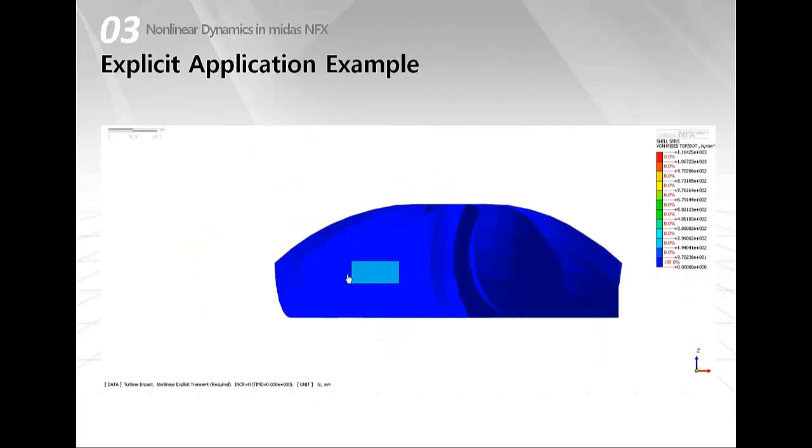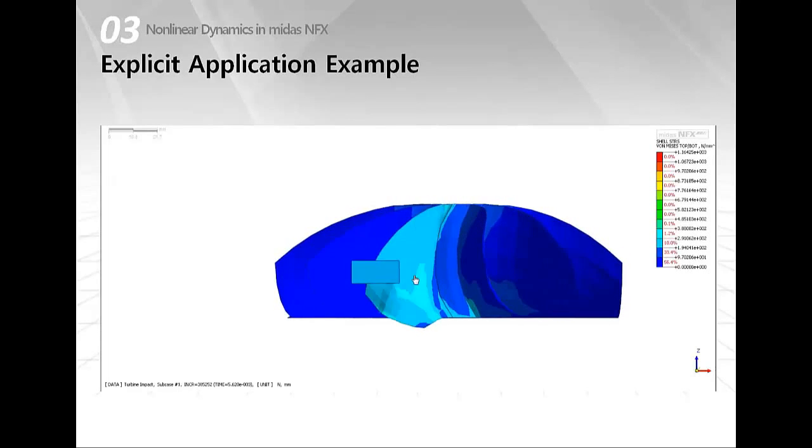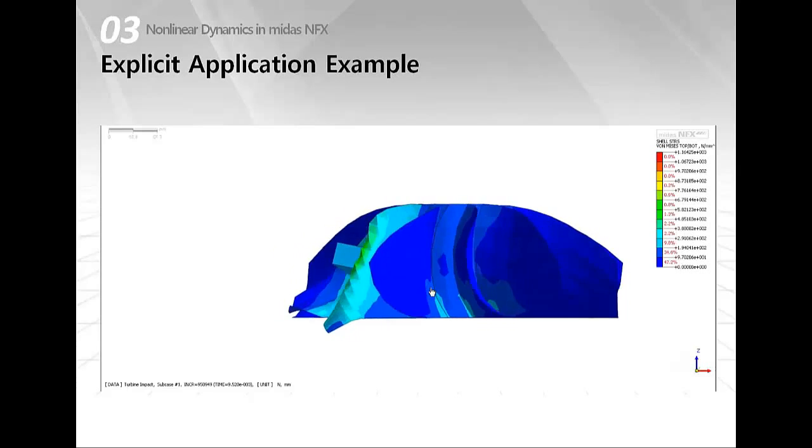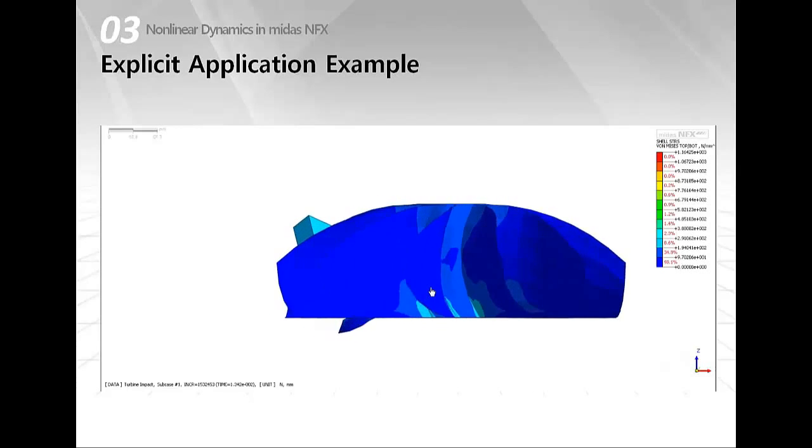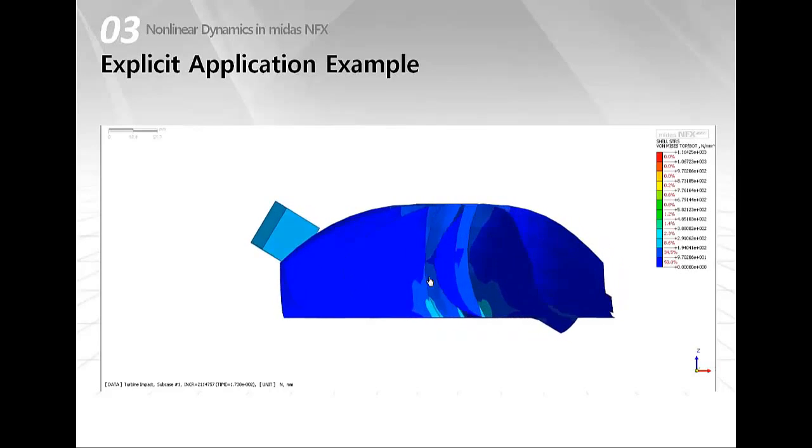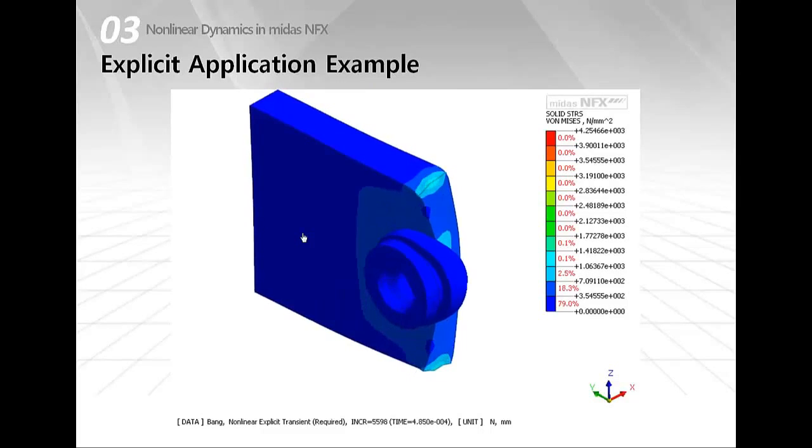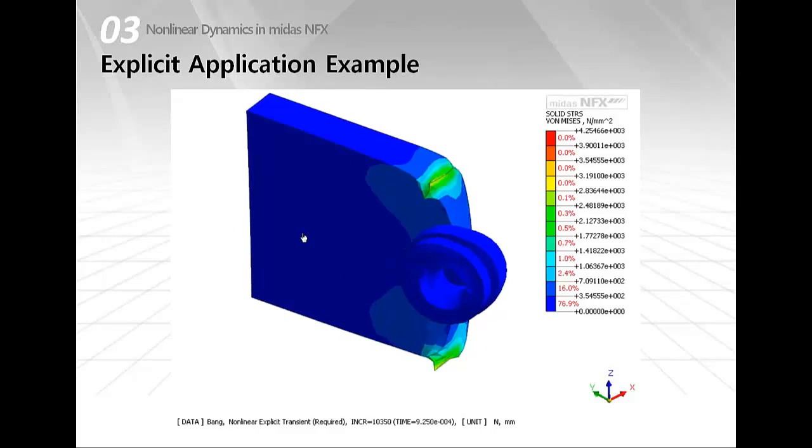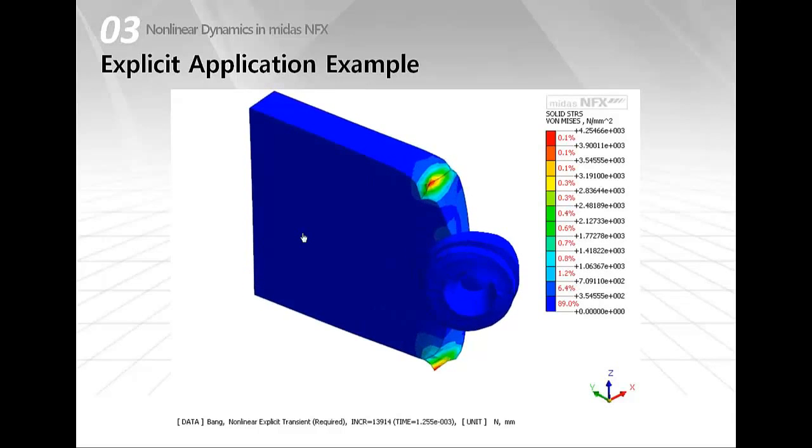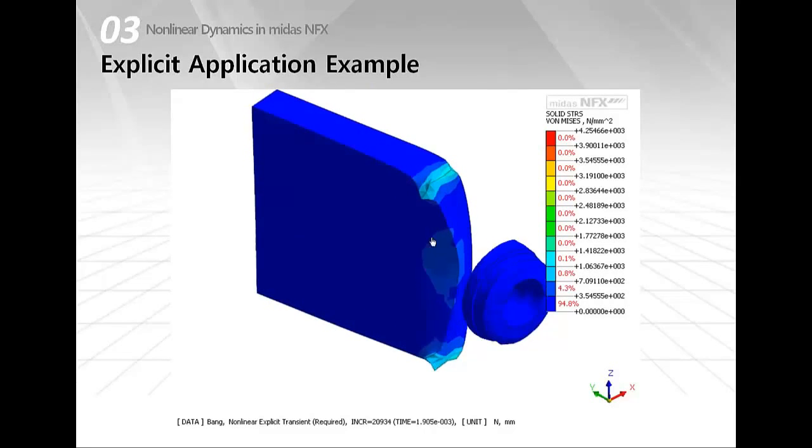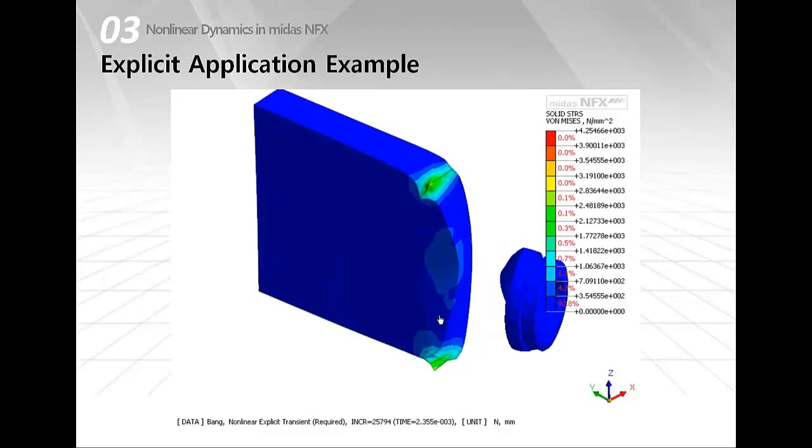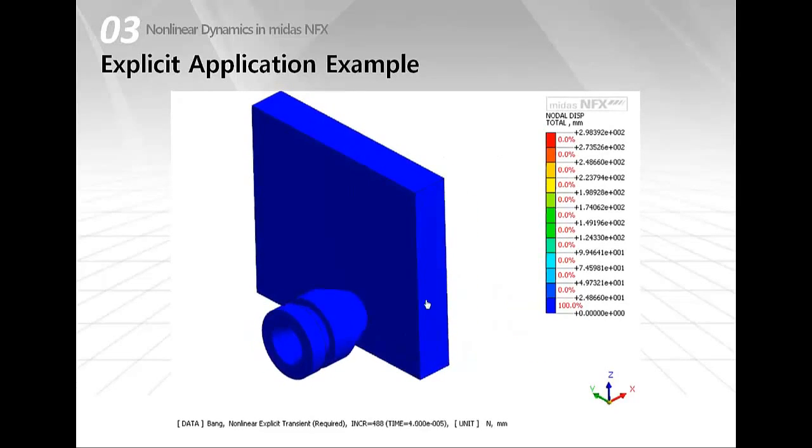So this is the same analysis but with another angle. And I'd like to show you another project also, which is a bullet impacting a wall. And this is also, this analysis is very short time analysis. So it's also using explicit analysis. And you can see the bullet has been deformed quite a lot. So here you are viewing the form of stresses. And this is a displacement.